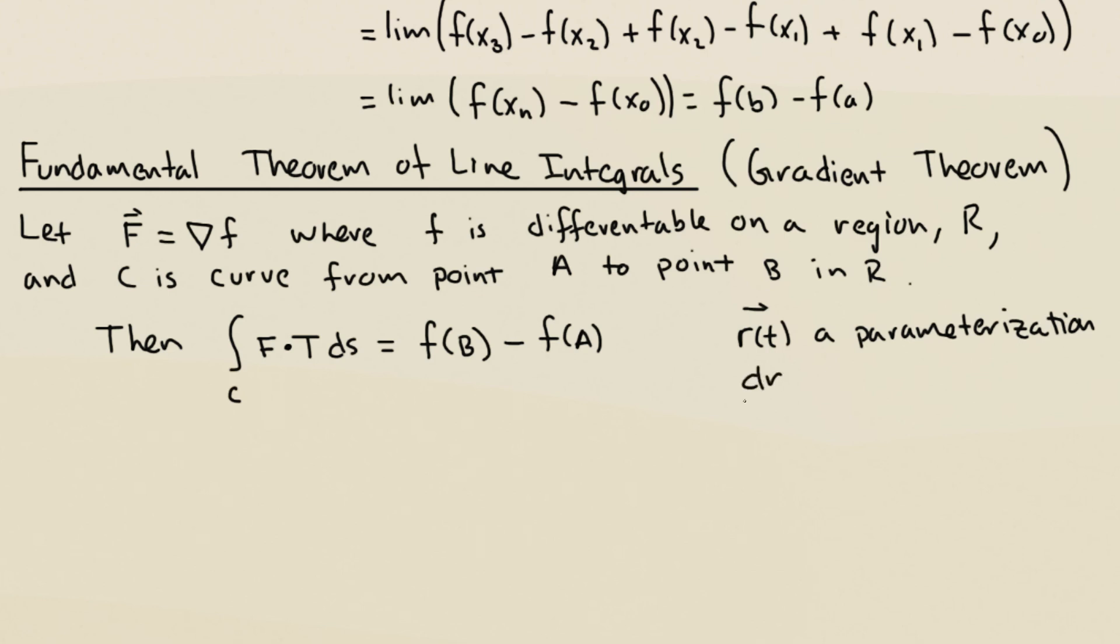If R is the position, then dr/dt is the velocity. And the unit tangent vector is v over magnitude v. And ds is the magnitude of v times dt. So that means that this piece right here, t ds, that's going to be v over magnitude v. That's t. And then ds will be magnitude v dt. And those magnitude v's will cancel. And I'll just have v dt.